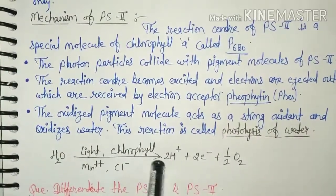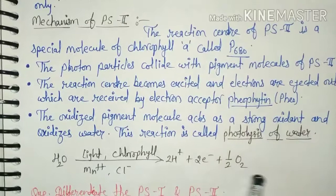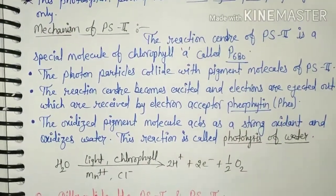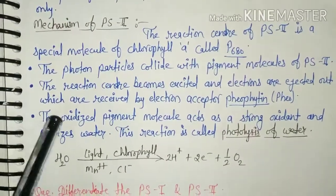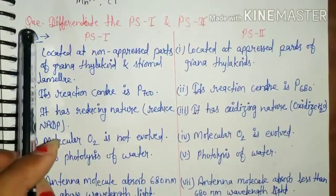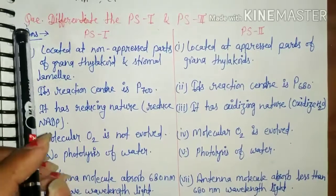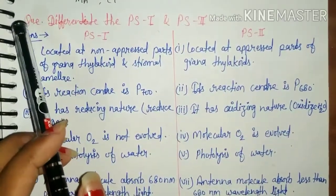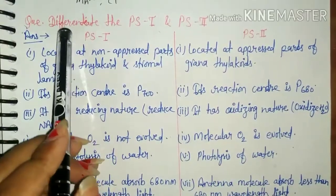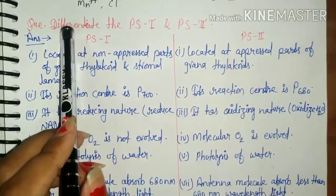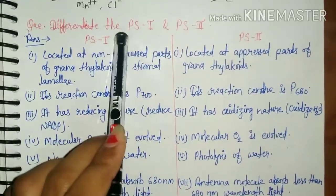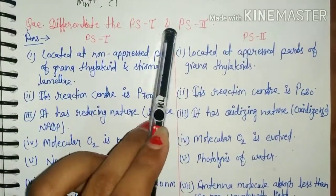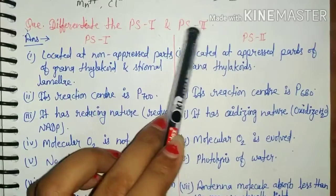In photolysis of water, with the help of photons, chlorophyll, magnesium ions, and chloride ions, water molecules are split into 2H⁺, 2 electrons, and half O₂ (oxygen is evolved). Now let us see the difference between photosystem first and photosystem second — that is, PS1 and PS2.